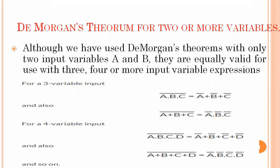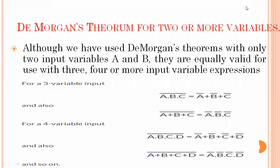De Morgan's Theorem can also be applied to three or more variables. For three variables: A dot B dot C bar equals A-bar plus B-bar plus C-bar. Similarly, the second theorem can be implemented for four variables, and the same rules apply for five, six, seven, eight, nine, or any number of variables.